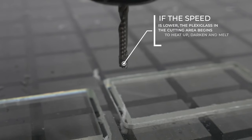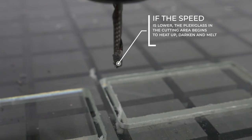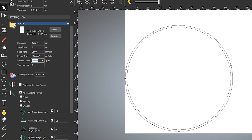If the speed is lower, the plexiglass in the cutting area begins to heat up, darken, and melt.